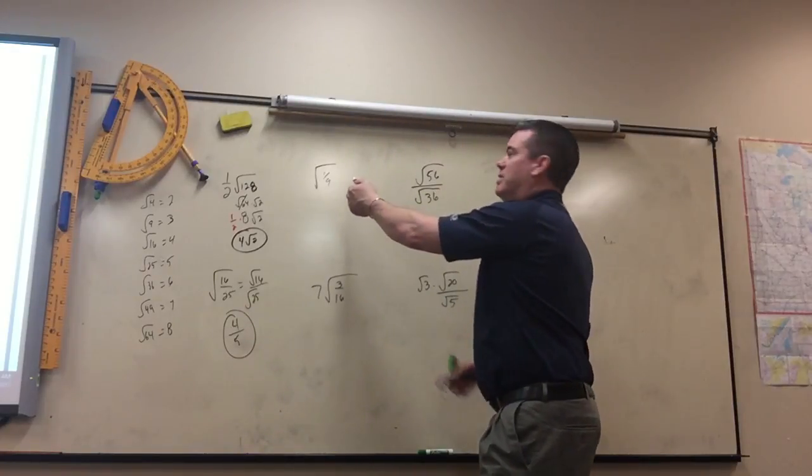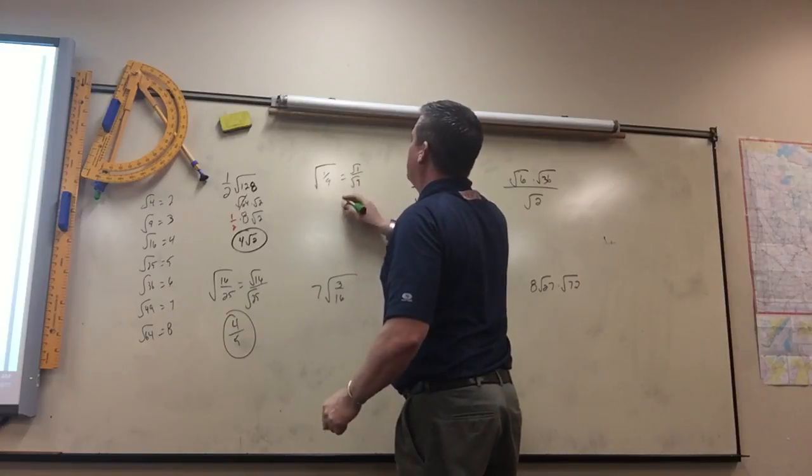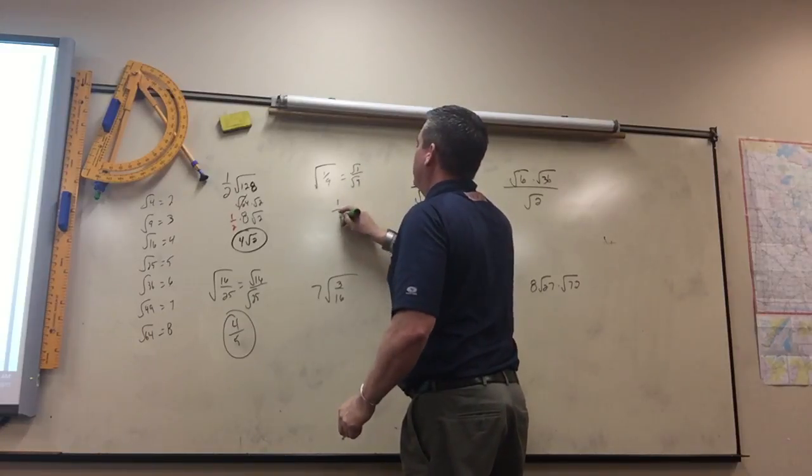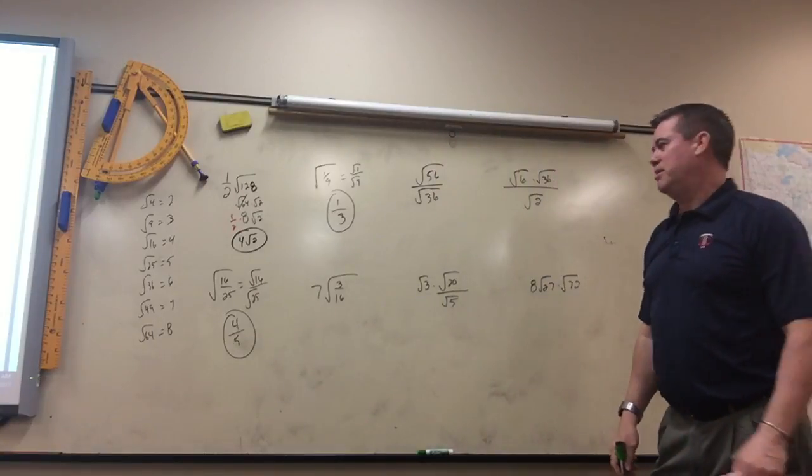This is the same thing. Square root of 1 over square root of 9, they're both perfect squares. Square root of 1 is 1. Square root of 9 is 3. So those are really nothing different.